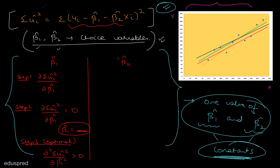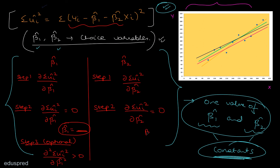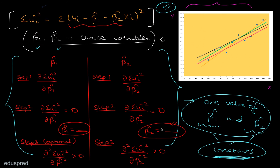We can apply the same procedure for beta2 hat. Step one: partially differentiate summation of ui hat squared with respect to beta2 hat. Step two: set the partial derivative equal to zero to get an expression for beta2 hat. Step three (optional): check that the double derivative is greater than zero, confirming that the expression for beta2 hat is minimizing the RSS and not maximizing it.